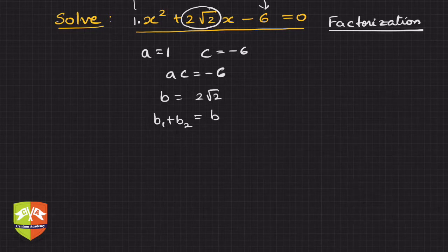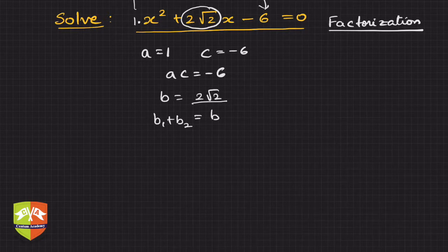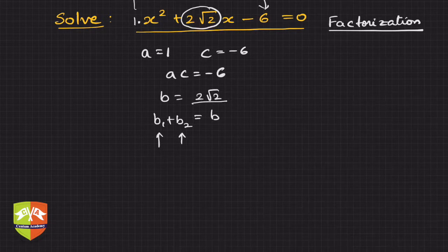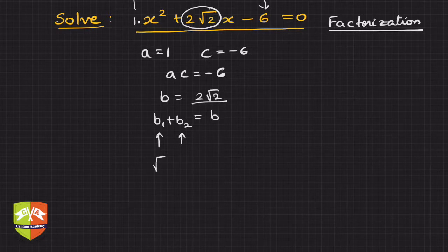Now you have to split b into two terms b1 plus b2 such that it is equal to b. And if I split an irrational number into a rational and irrational, then the product will never be rational. So both b1 and b2 must be irrational, and that too carrying √2 only. Both of them must have an irrational part with √2.